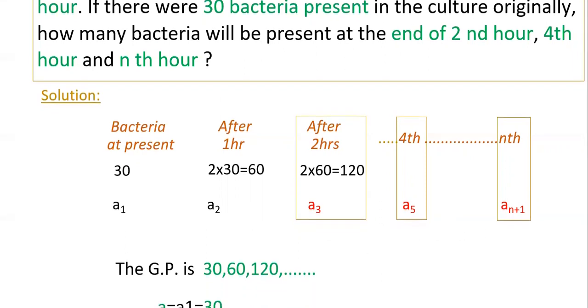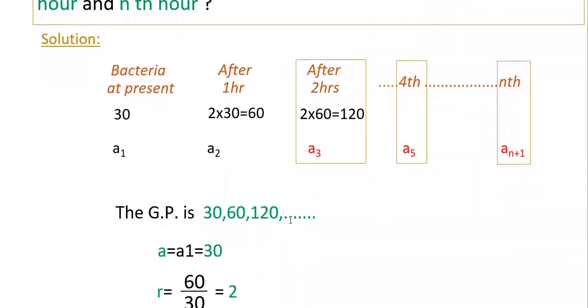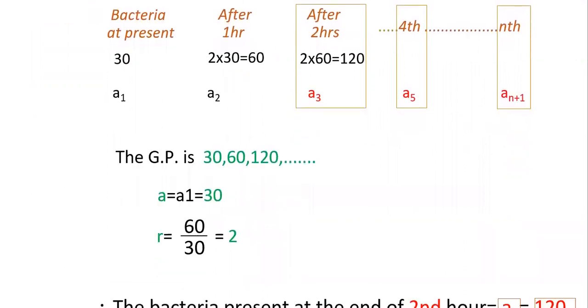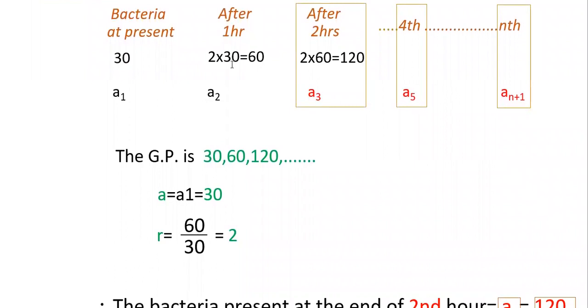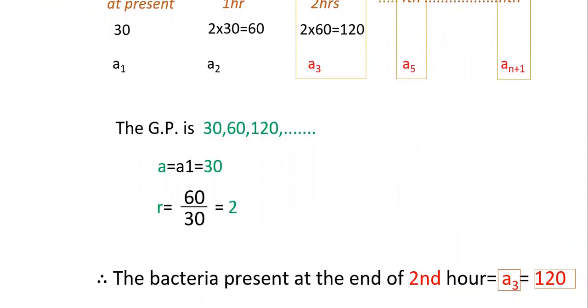First write the GP here: 30, 60, 120, etc. a is equal to the first term, that is 30, and r is the common ratio, that is 2 (60 by 30 equals 2). The bacteria present at the end of second hour, that is a₃, we have already calculated here, that is 120.